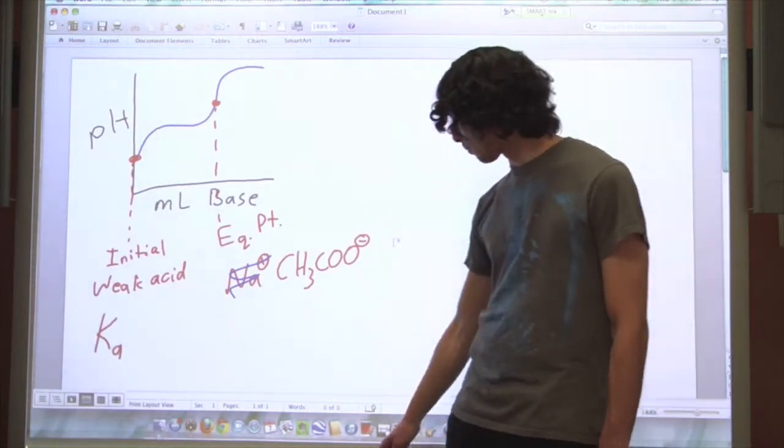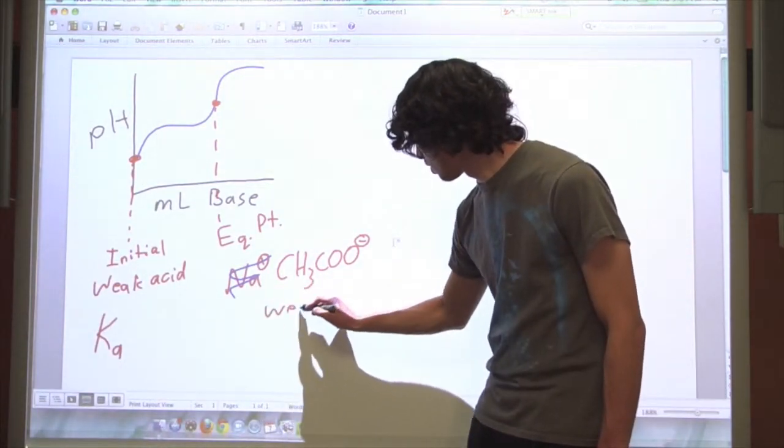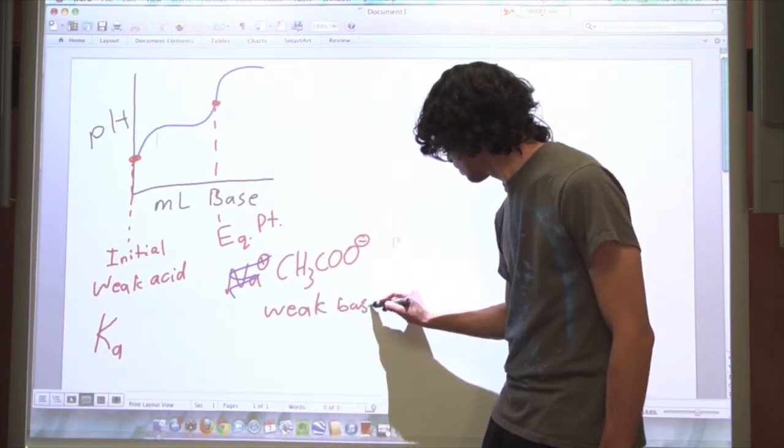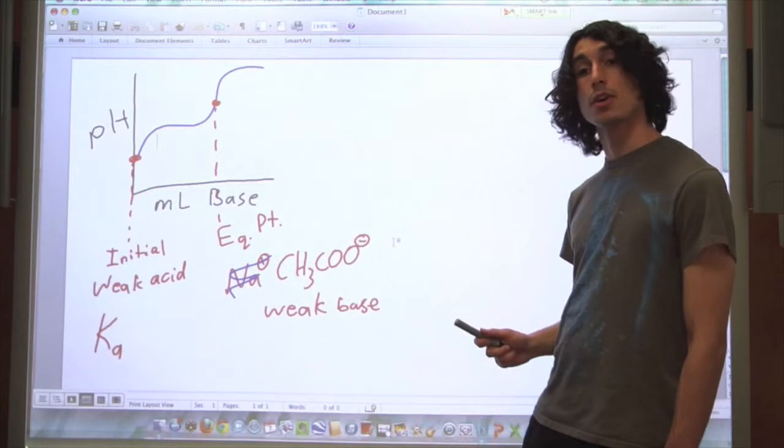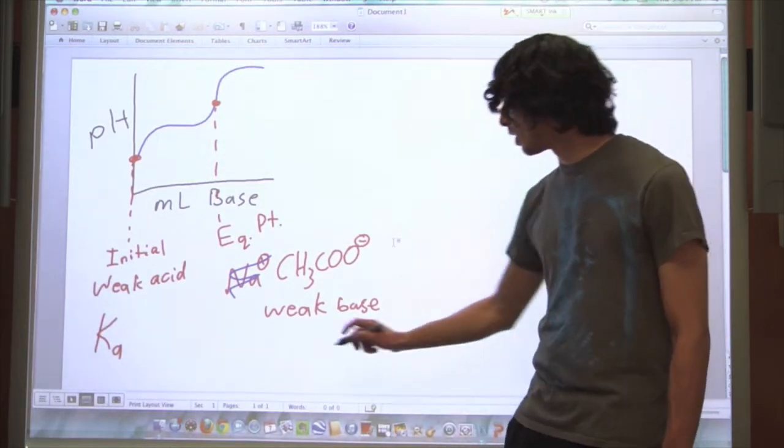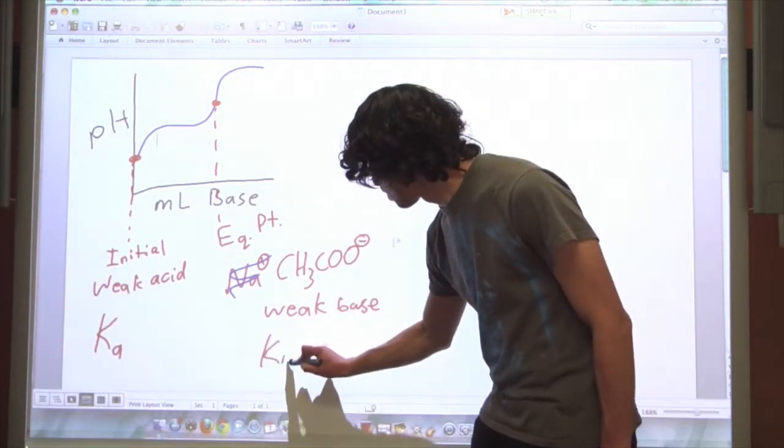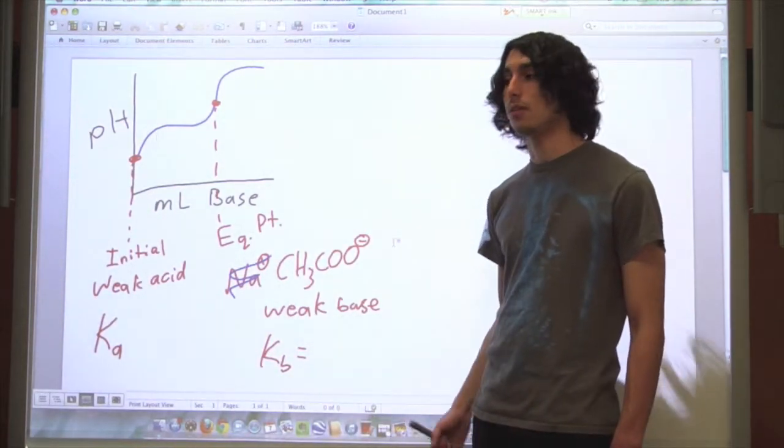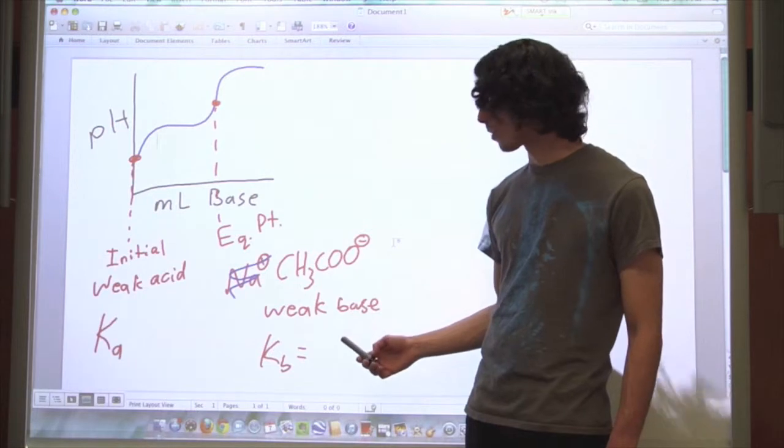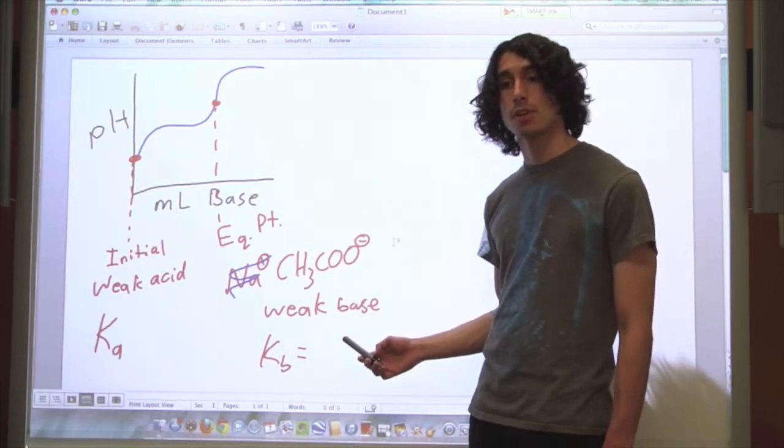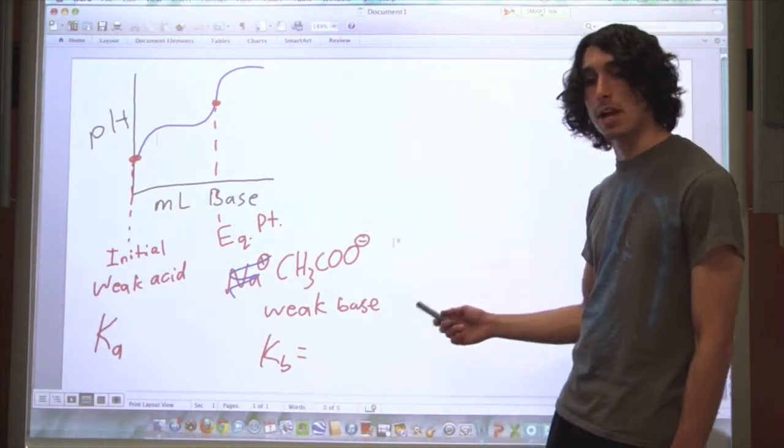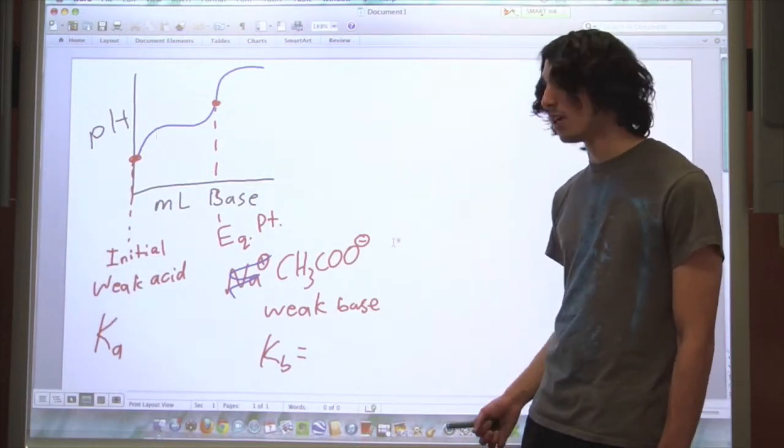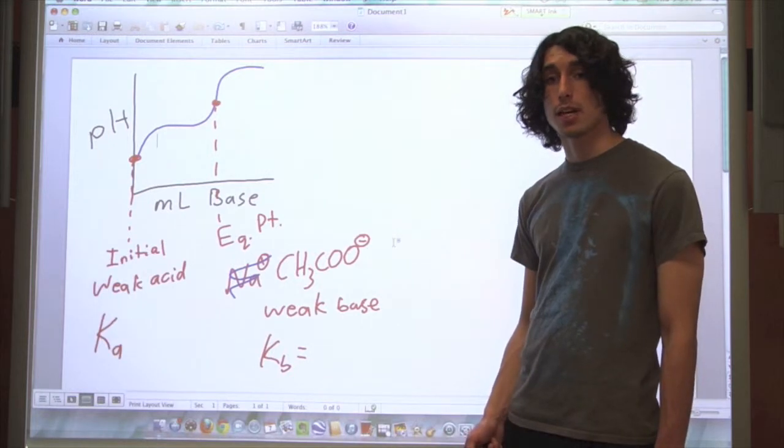So here, the problem we're solving is a weak base problem. And again, you already know how to solve this. All you have to do is say Kb is equal to your equilibrium expression, and you use an ice table to sub in x's for each of those concentrations, and then you solve a quadratic equation, and you get the concentration of hydroxide ions.